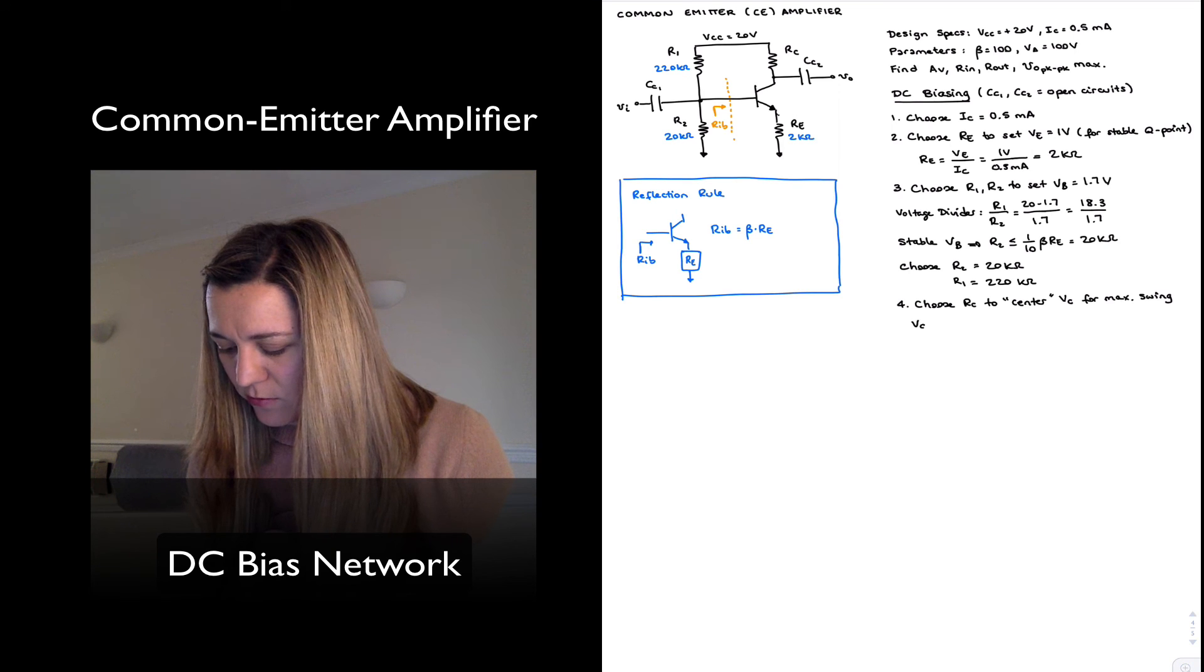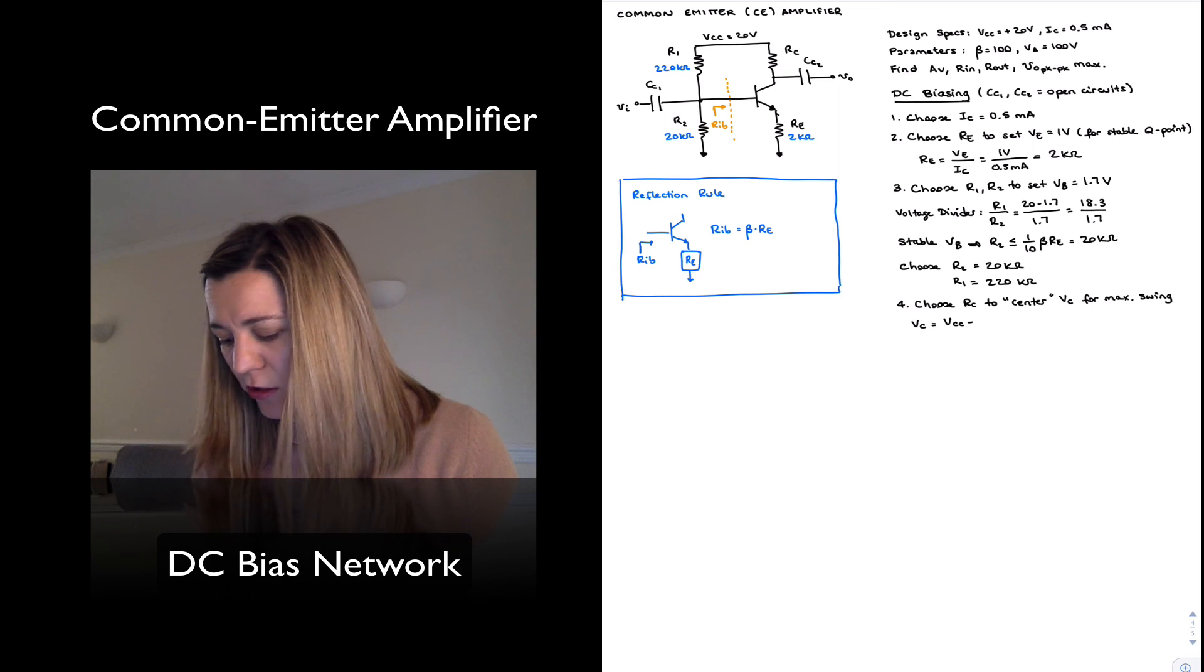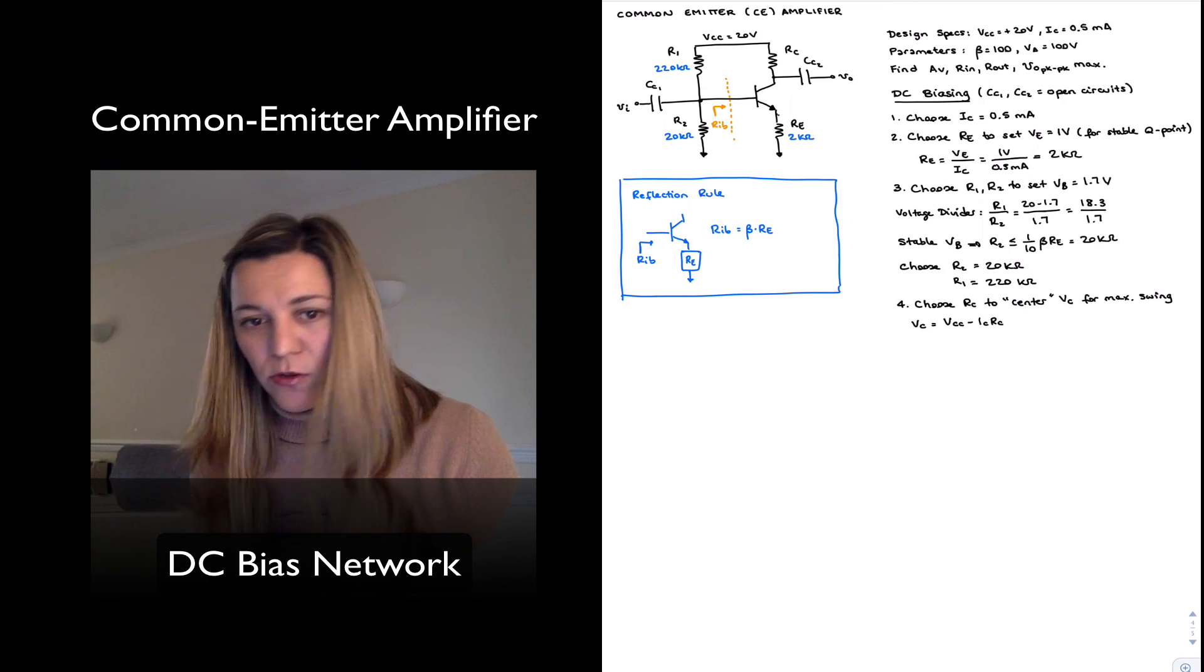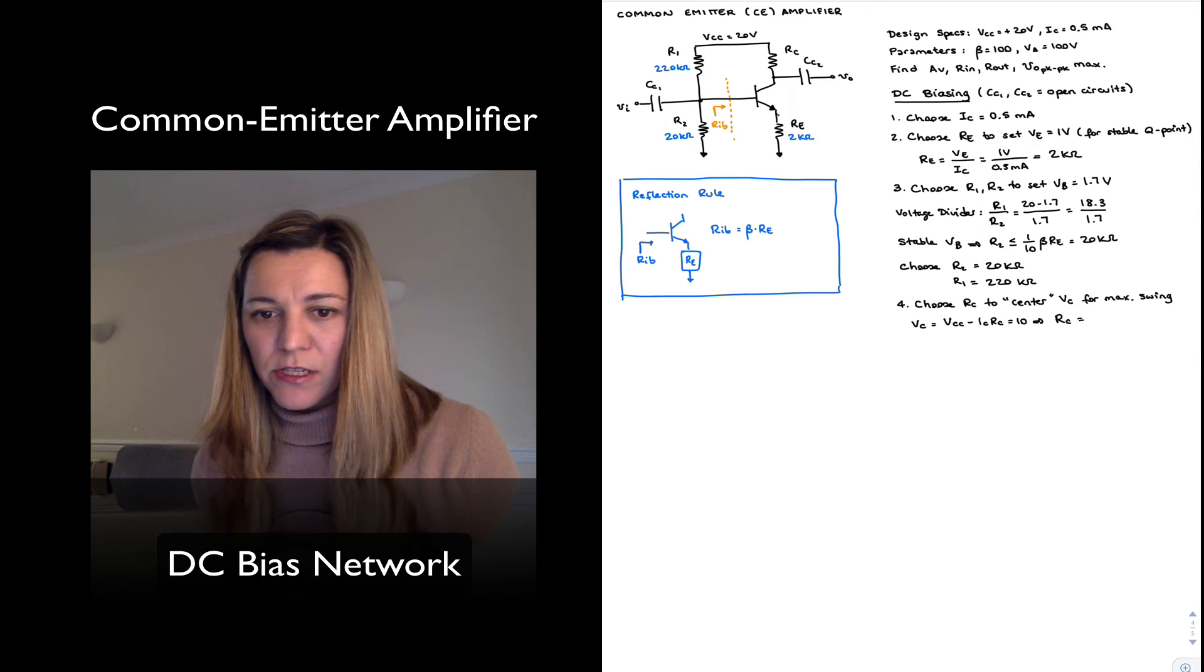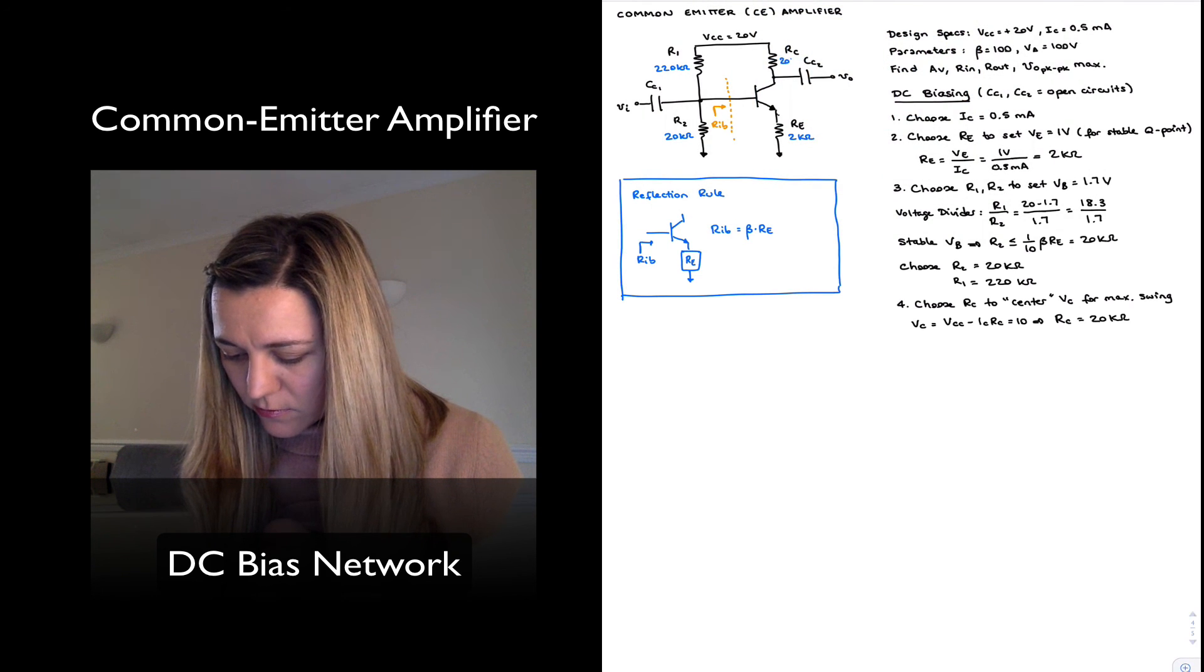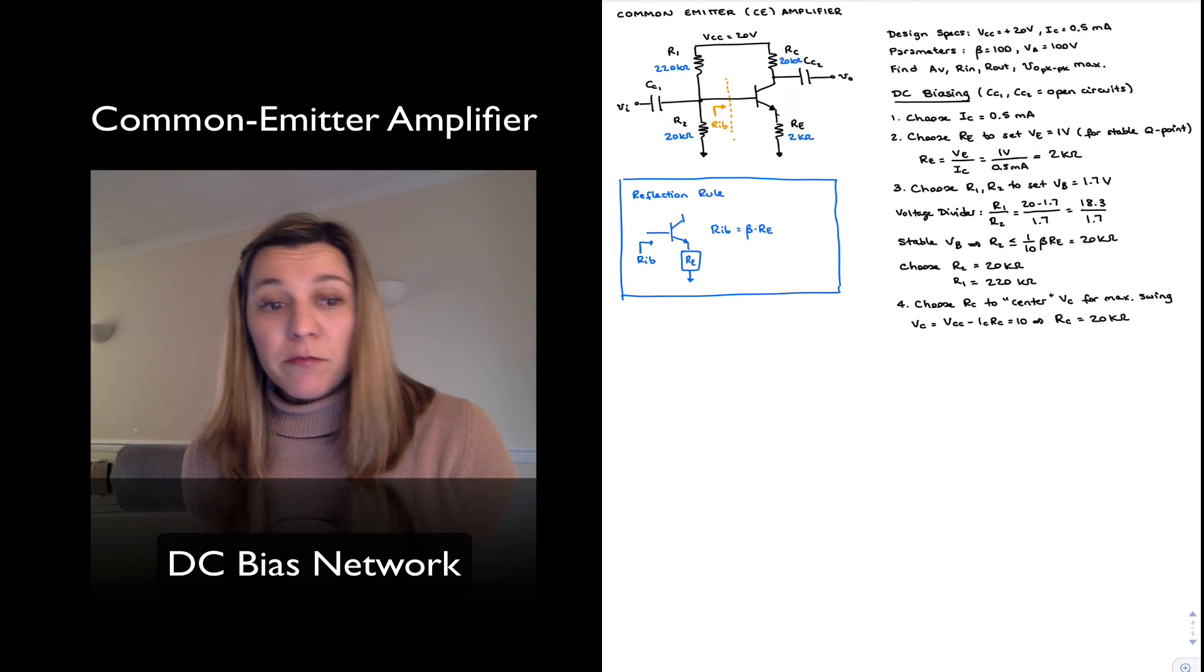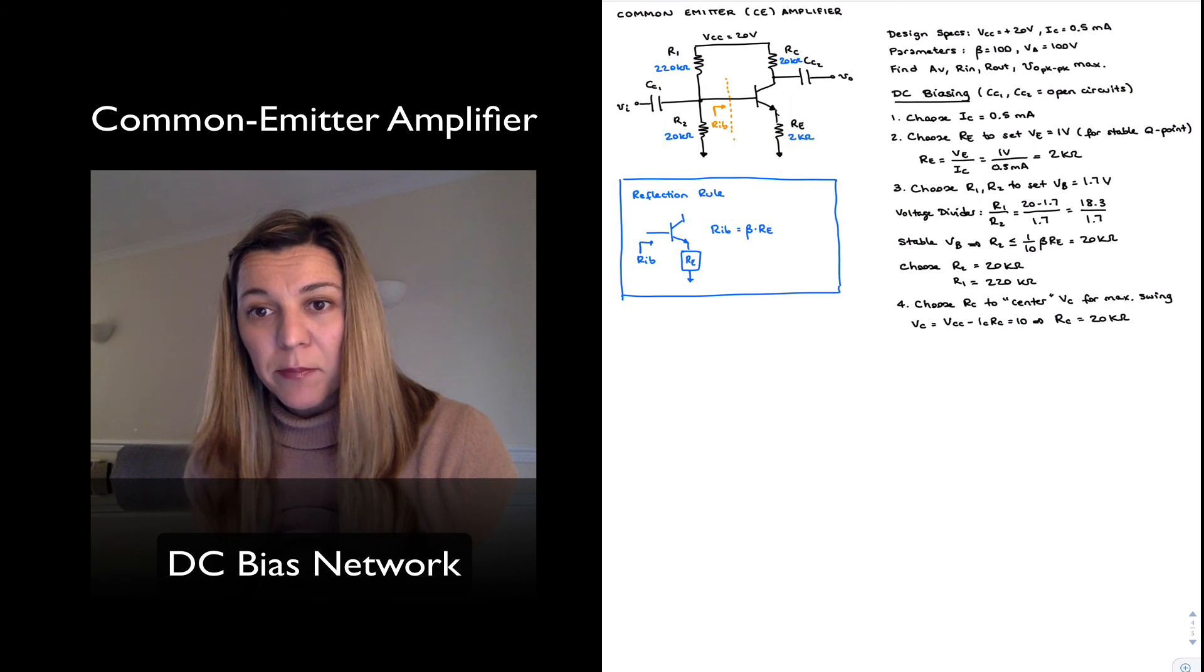So my collector voltage is going to be equal to Vcc minus the voltage drop across the collector resistor, which is RC times IC. And so I can solve for my collector resistor. I want VC to be equal to 10. And that gives me a collector resistor of 20 kilo ohms. And I'm basically done. This is the DC biasing network for my amplifier.